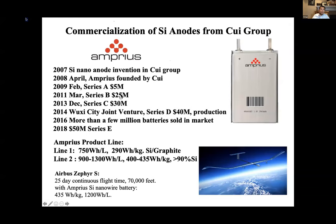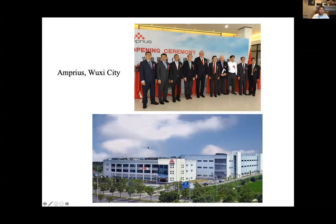Amprius now has very high energy density batteries in the 430 Wh/kg range using nearly pure silicon — around 1200–1300 Wh/L. Amprius is providing batteries to Airbus Zephyr S, which broke the world record in flight time at 25 days continuously. During the day it charges from thin-film solar cells, and at night it relies on the batteries to fly, requiring very high energy density. Silicon is still challenging for industry because there are so many problems to overcome, but I look forward to seeing more silicon-based batteries coming to market.